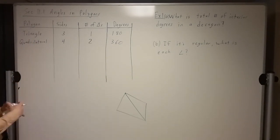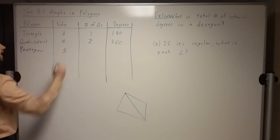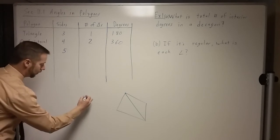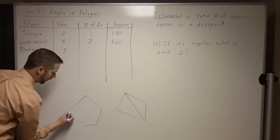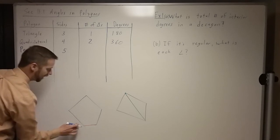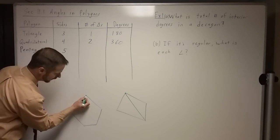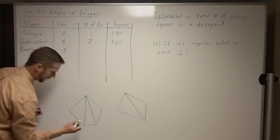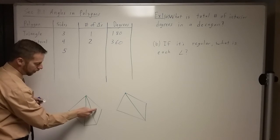Let's keep going up in number of sides. Next up, what if we've got a pentagon? A pentagon has five sides. How many triangles would a pentagon have? Let me draw one — one, two, three, four, five sides. If I go from one vertex and draw in all the diagonals I could make, I could make those two diagonals, which splits it into one, two, three triangles.